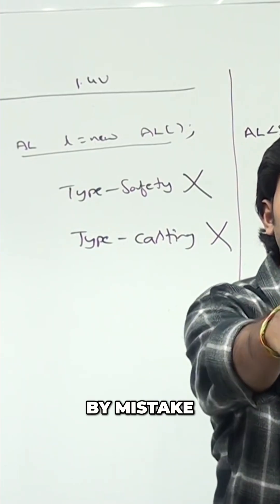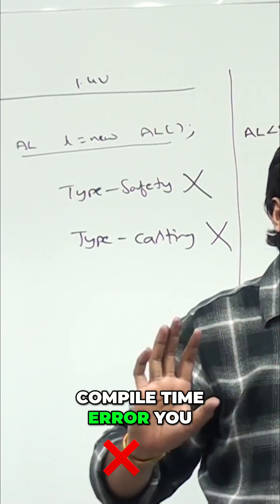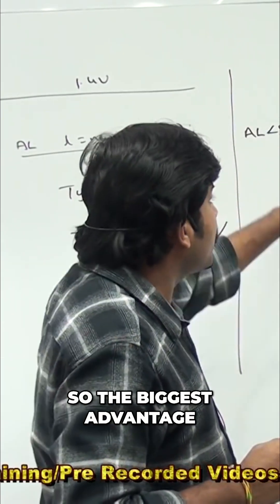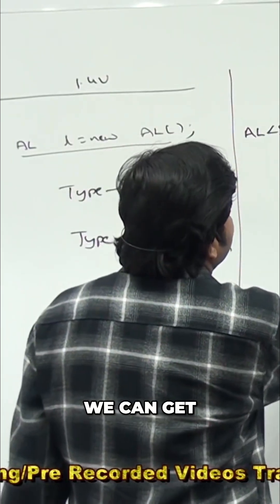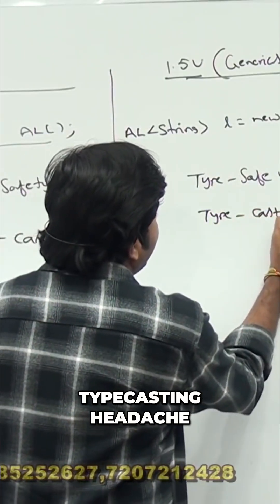So the biggest advantage here is type safety we can get. Type casting headache won't be there in this generic version.